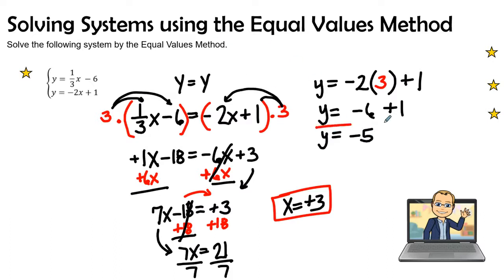So the solution or the answer where these two lines intersect is at the point 3, negative 5.